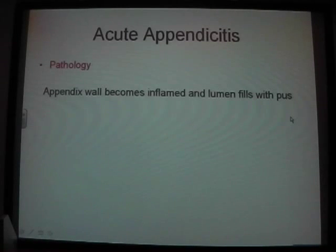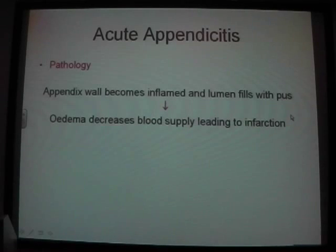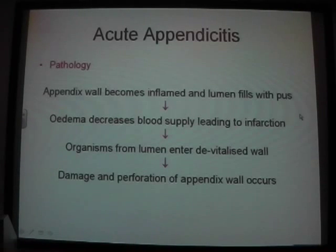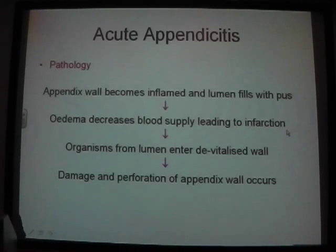The appendix wall becomes inflamed and the lumen fills with pus. It becomes oedematous, and then the blood supply decreases, leading to infarction, compromise of the venous and arterial supply, and then leading to damage and possibly perforation of the appendix wall.